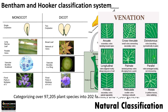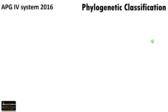That makes a natural classification. In natural classification, classification is based on many observable morphological, anatomical, or even embryological characters. This classification system shows evolutionary relationships among organisms to some extent.